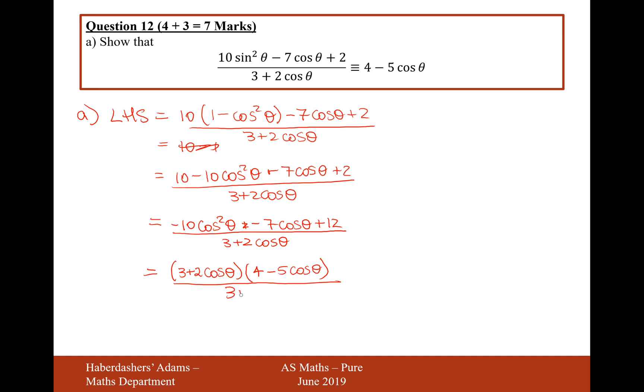And then divide that by 3 plus 2 cos theta. How did I know it would probably be 3 plus 2 cos theta? Well, it's because at this stage here, I'm going to cancel out top and bottom to leave me with just 4 minus 5 cos theta, which is exactly what I want it to equal on the right-hand side. So there we are.